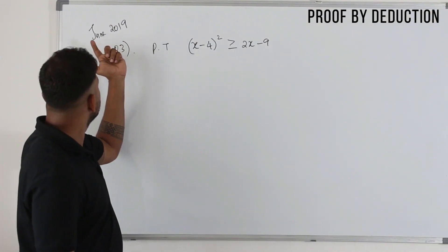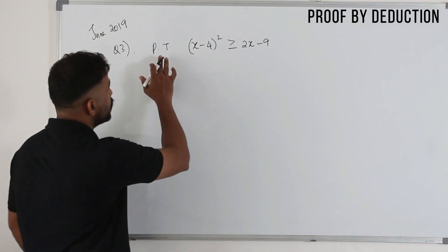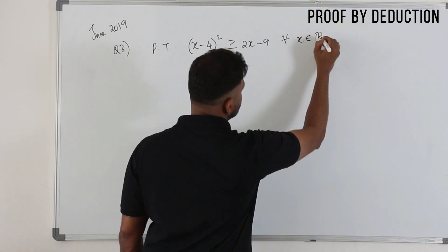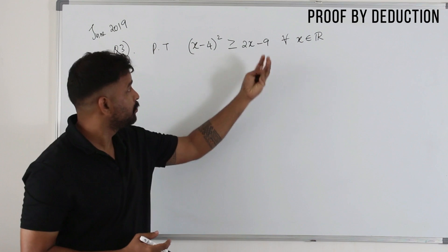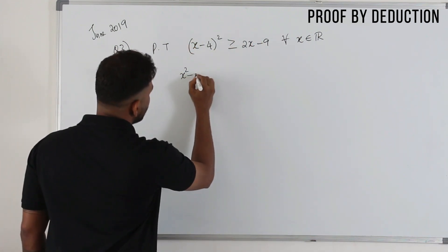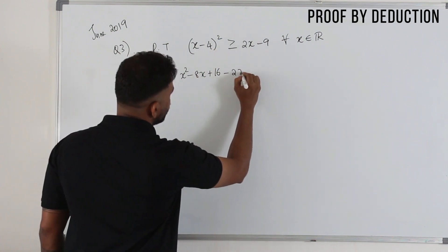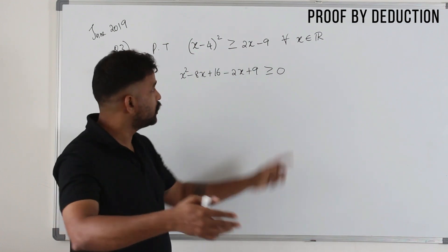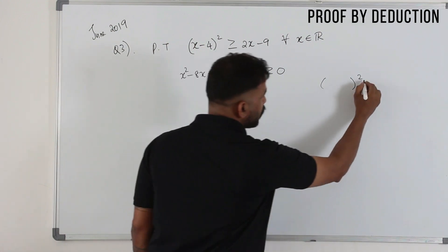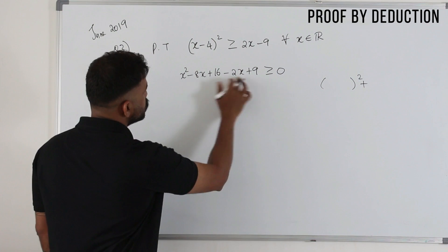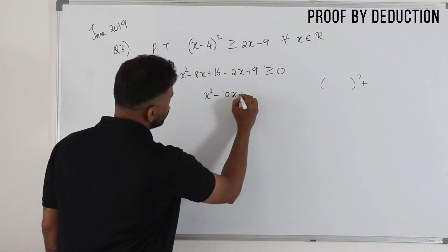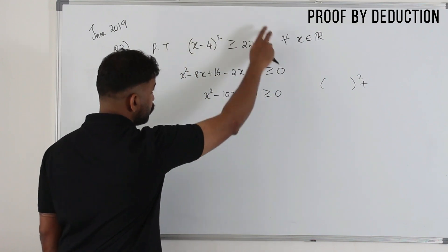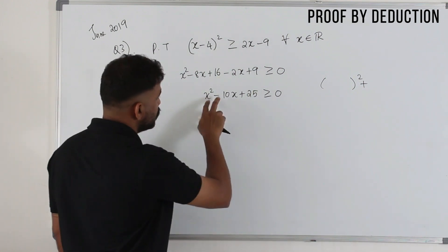Here's a past paper question from June 2019, Question 3: prove that x minus 4 whole square is greater than or equal to 2x minus 9 for all real values of x. First step — collect all terms to one side. Expanding gives x squared minus 8x plus 16, then bring the other term over: minus 2x plus 9 is greater than or equal to 0. Proving this directly is hard, but proving something is positive is easy. We simplify to get x squared minus 10x plus 25 is greater than or equal to 0.